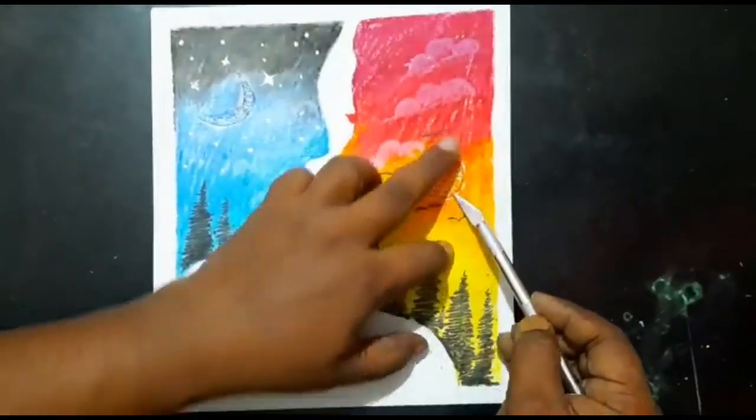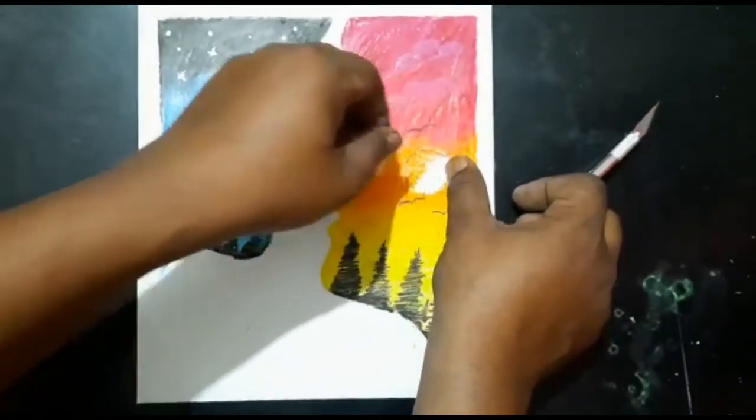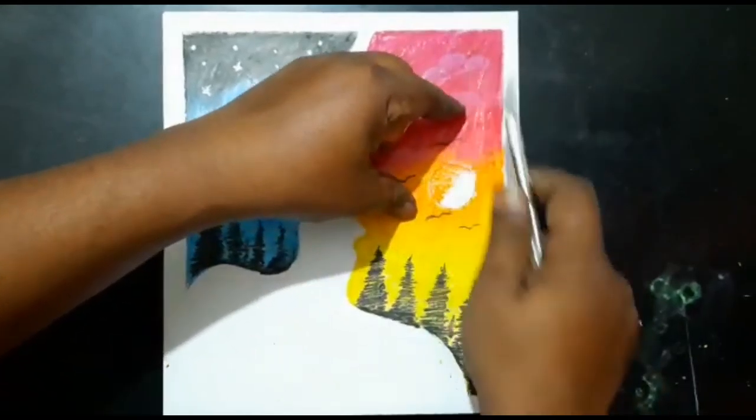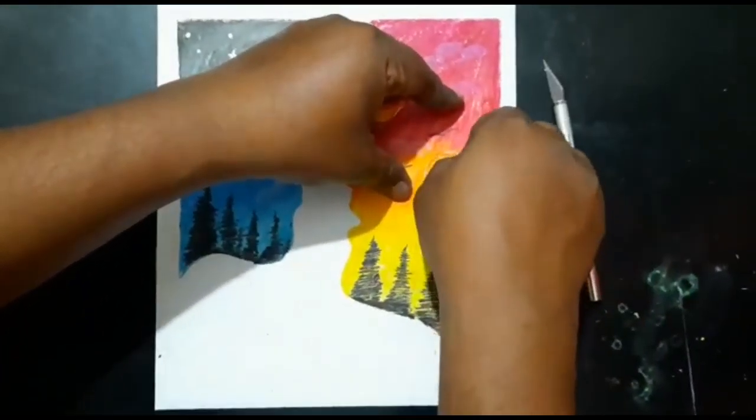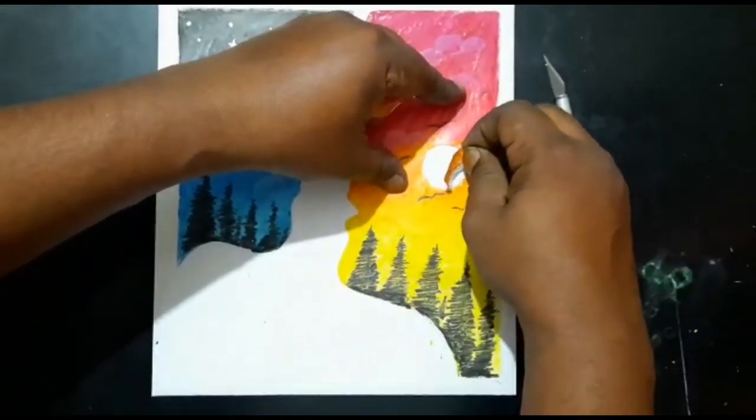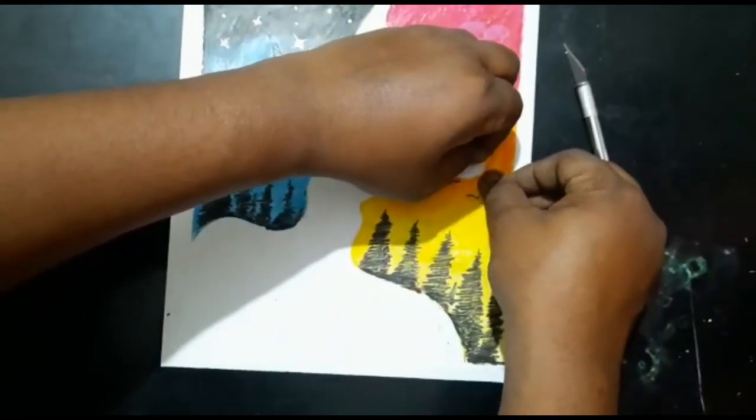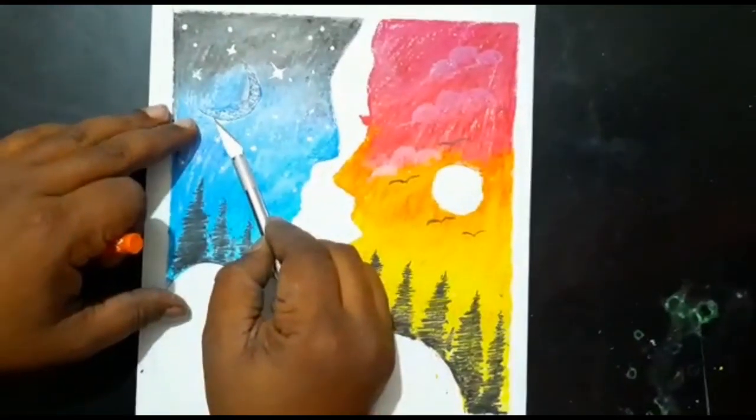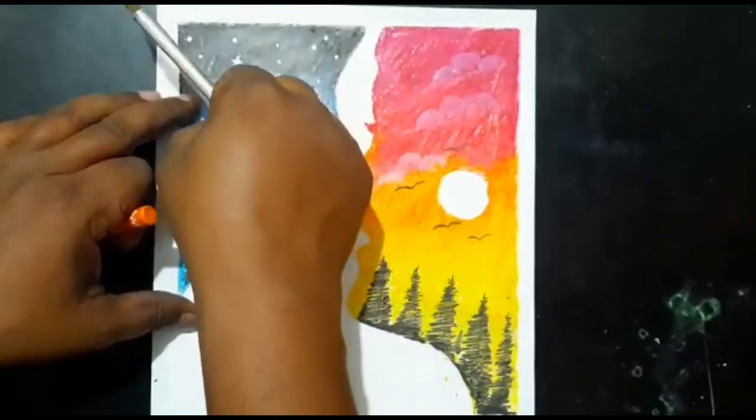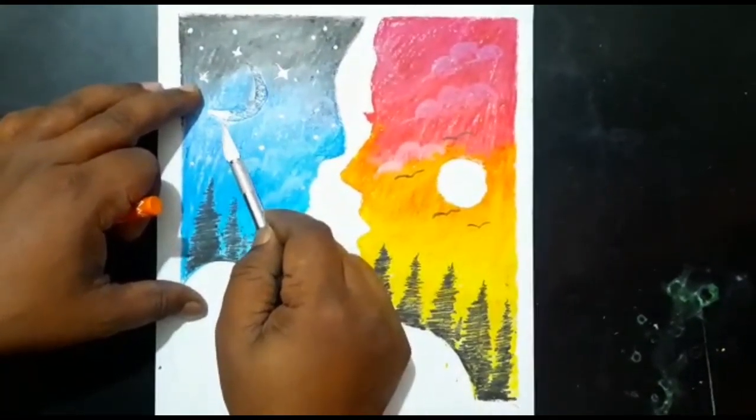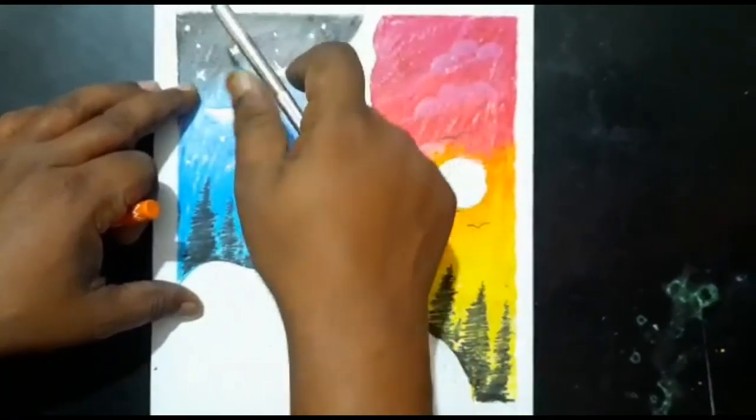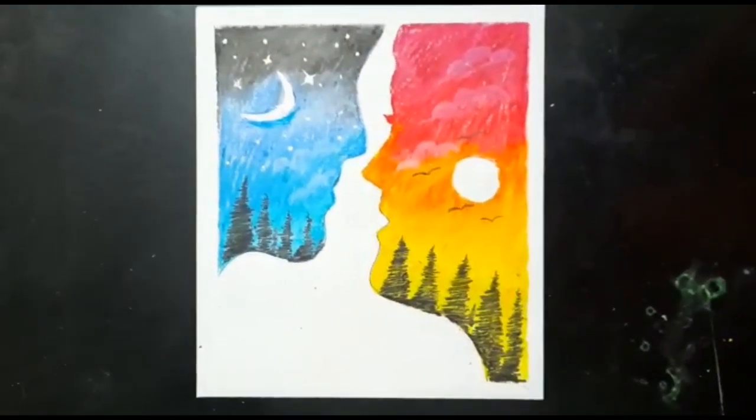Now only one more thing is remaining, that the moon and the sun. So for the sun, which I kept a circular tape, so that I removed. And for moon also, with one crescent shape, the half moon.